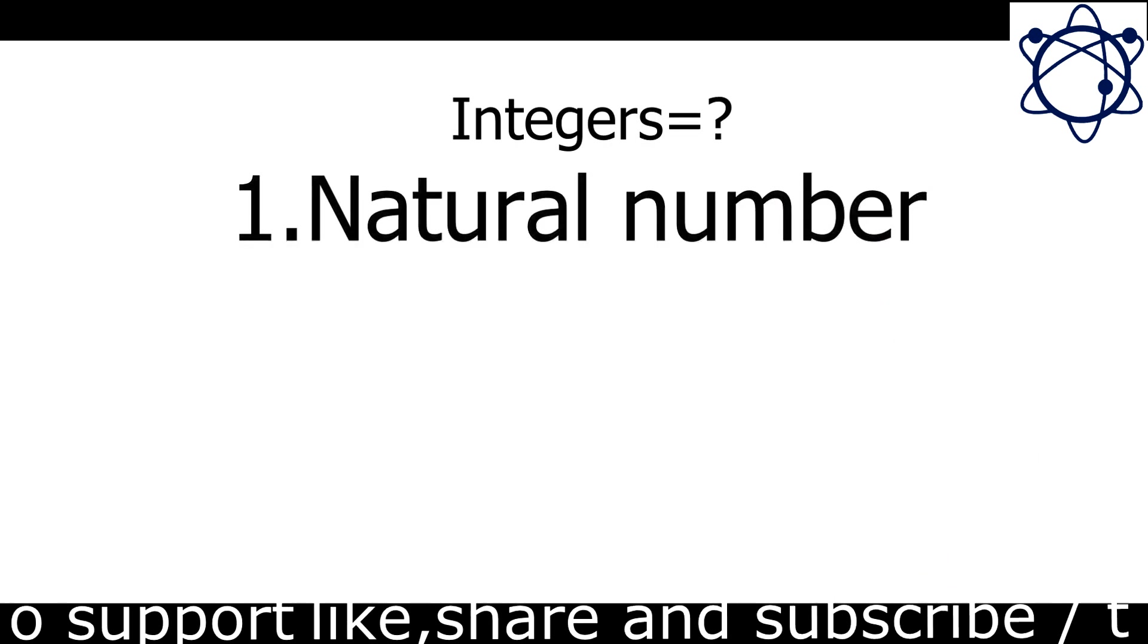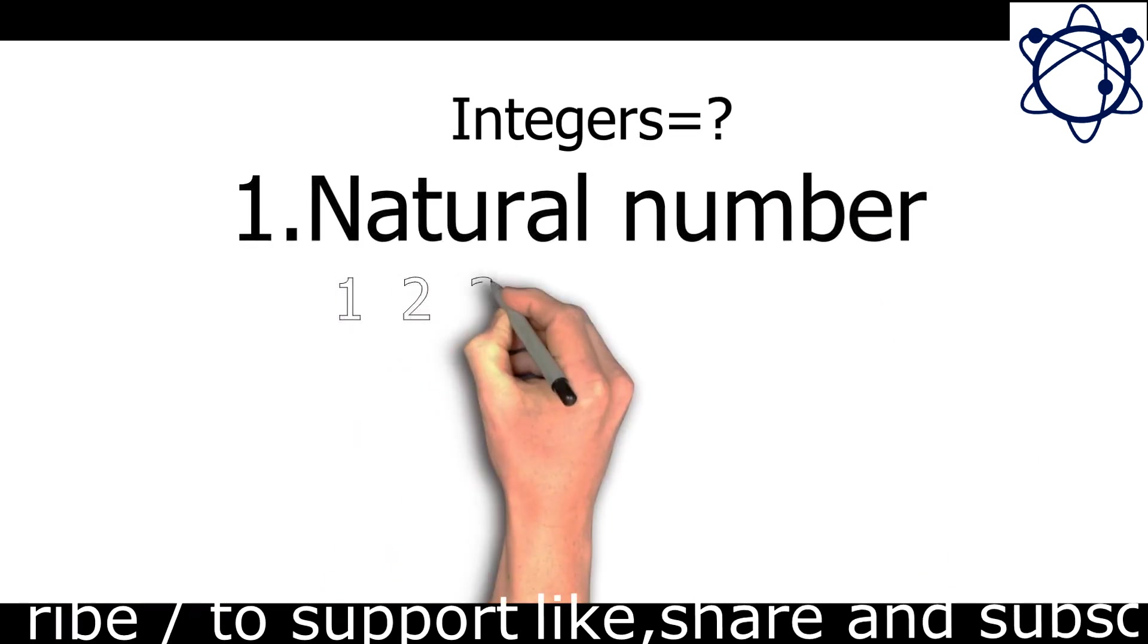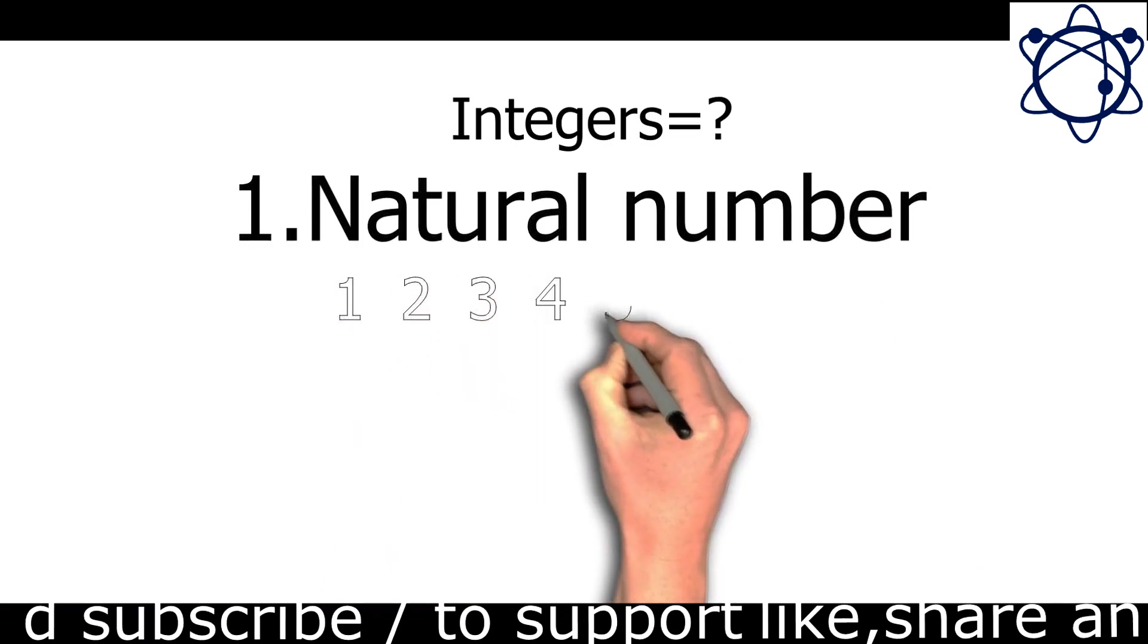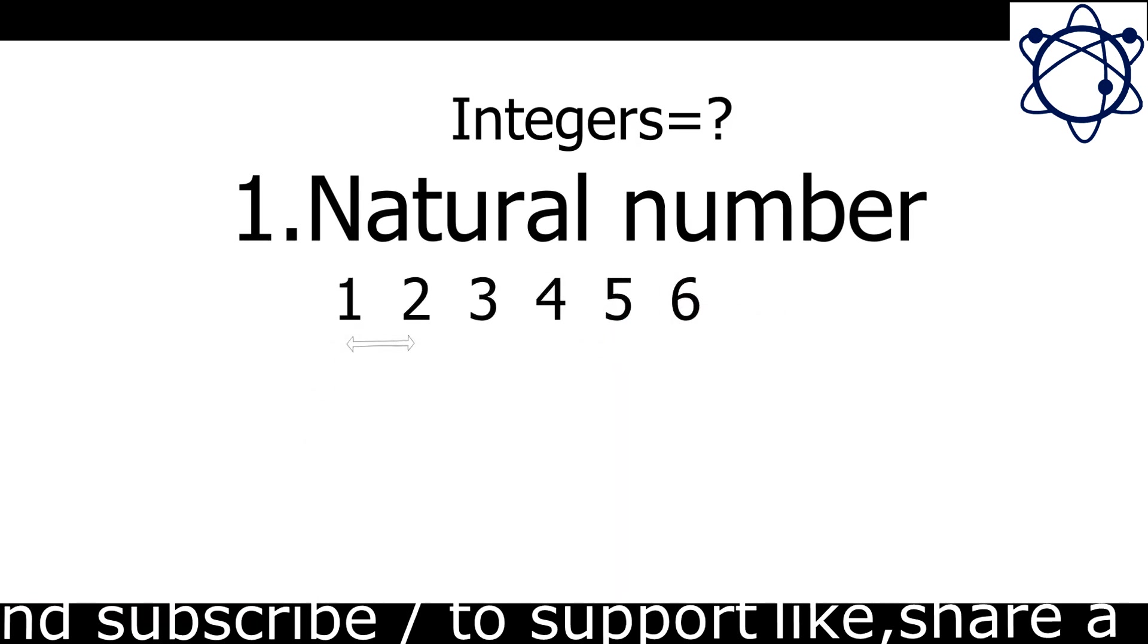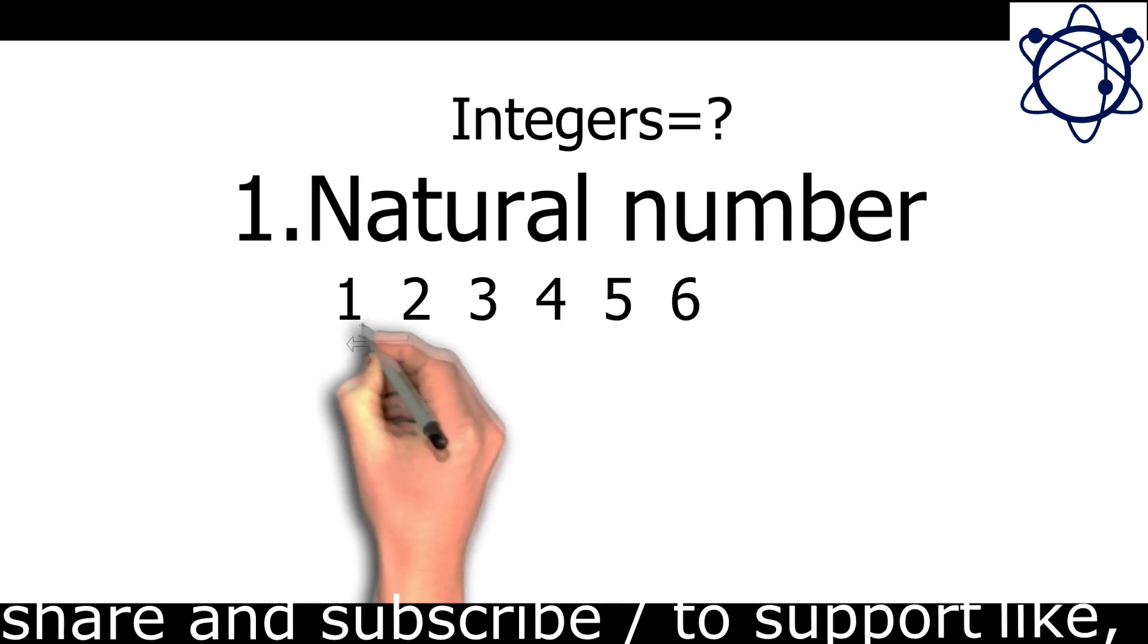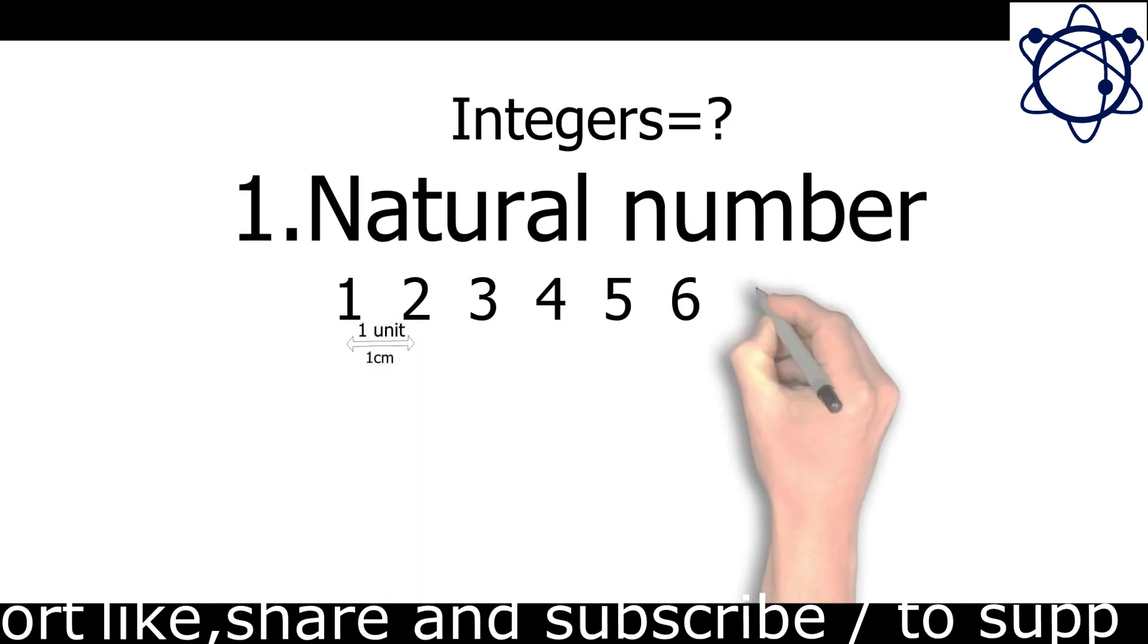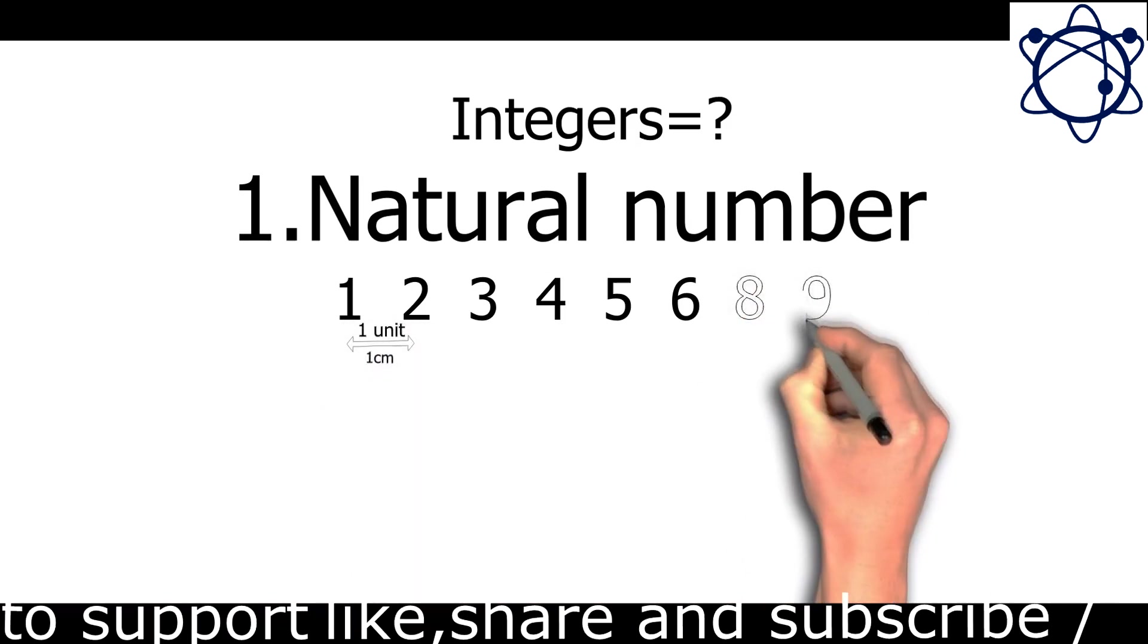The natural number starts with 1, 2, 3, 4, 5, 6. If we count these numbers, these are all the numbers that are fixed, that is 1 centimeter and 1 unit. So these numbers are all the natural numbers. Now where are the natural numbers?